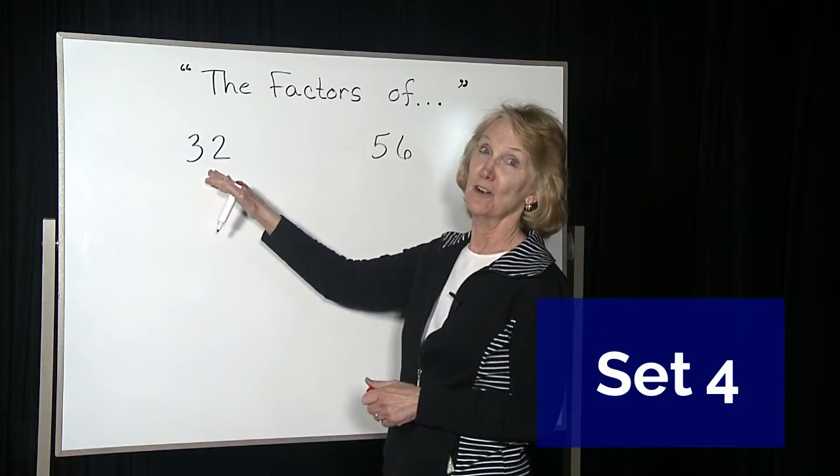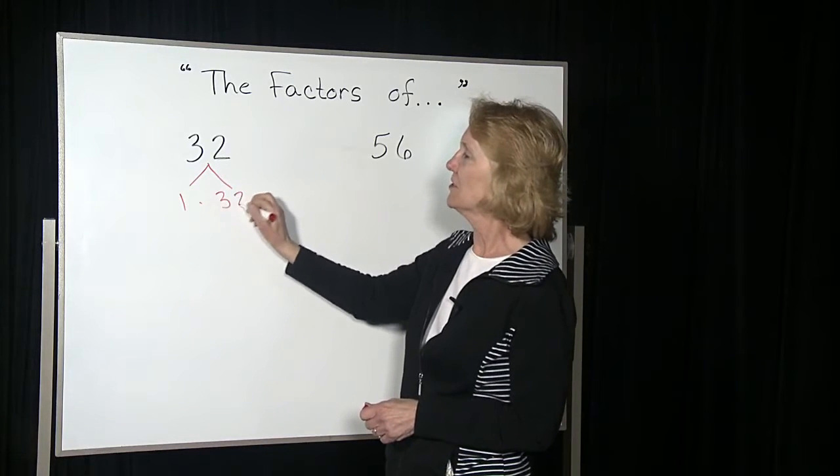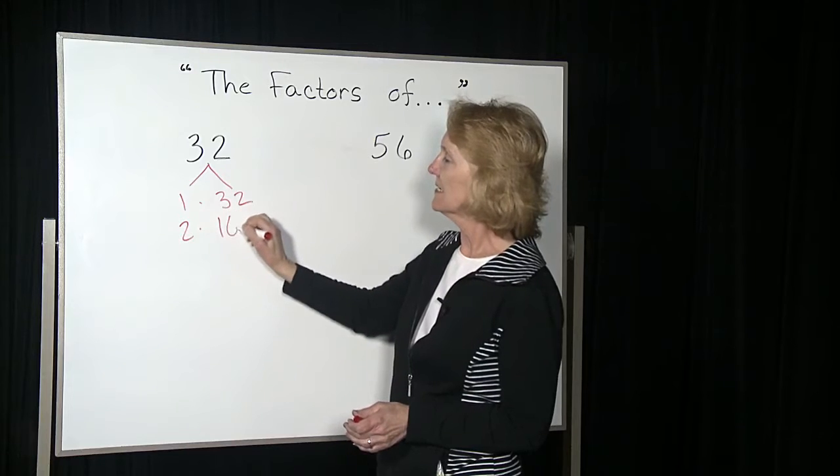If we're given the number 32, we can say, well, that's 1 times 32. It's even, so I know I can cut it in half. 2 times 16.